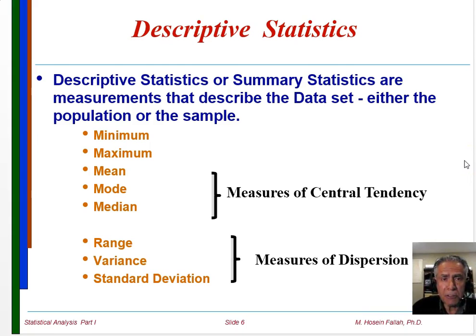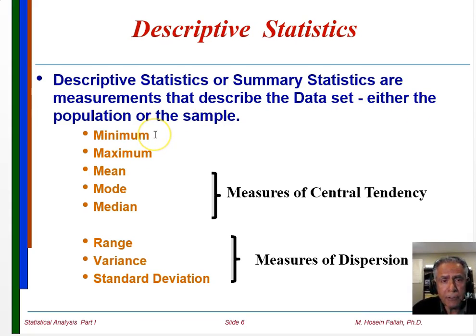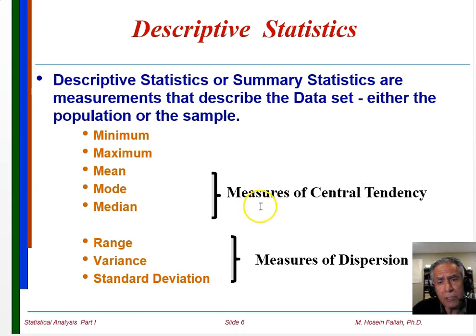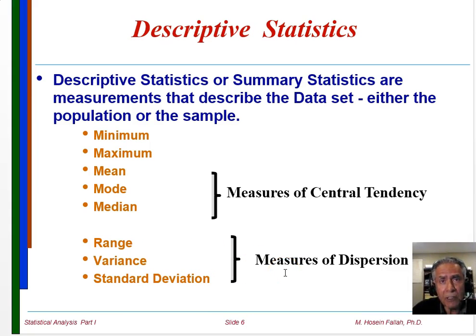What are descriptive statistics? Descriptive statistics or summary statistics are measurements that describe the data set, either the population or the sample. The data could have a minimum value, maximum value, a mean, mode, and median. Mean, mode, and median are normally referred to as measures of central tendency of the data. We also have range, variance, and standard deviation, which are measures of dispersion of the data — how data values differ from each other.